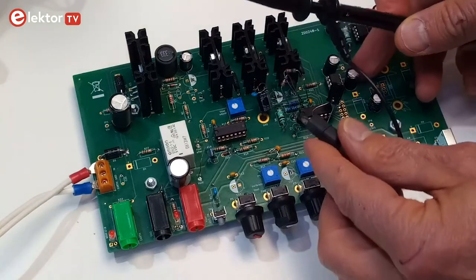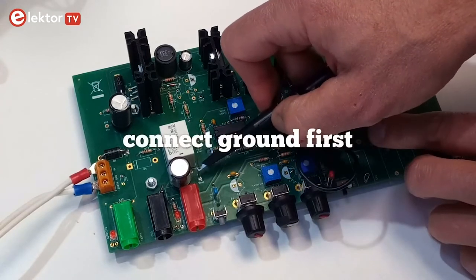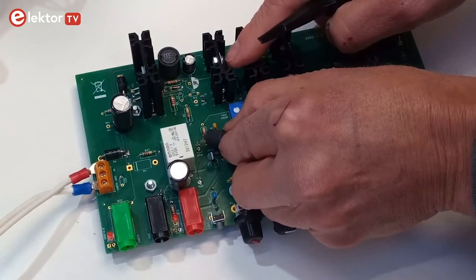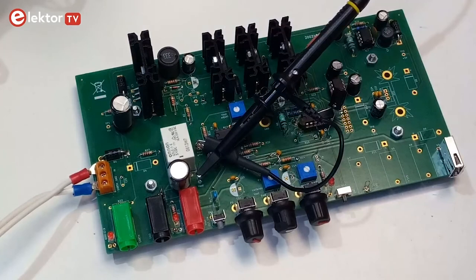Before connecting the tip of the probe to the signal of interest, first connect the crocodile clip attached to the probe to the ground reference of the circuit under test. As a general rule, connect it as close as possible to the signal. However, in many cases this is not so important, as long as it is connected to ground somewhere.